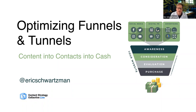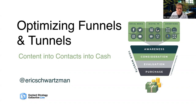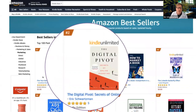It is great to be here with you today to talk about optimizing funnels and tunnels to turn content into contacts into cash. It is exciting to be here at the Content Strategy Collective Live conference. At the end of my talk, I'm going to tell you how to get a free copy of my latest book, The Digital Pivot: Secrets of Online Marketing, with a foreword by David Pogue. So be sure to stick around to the end so you can figure out how to get a free copy of my bestseller.